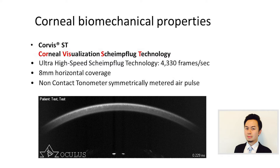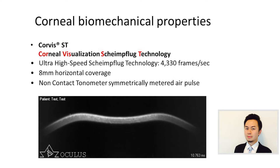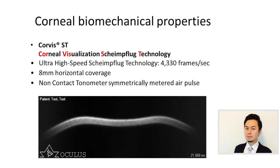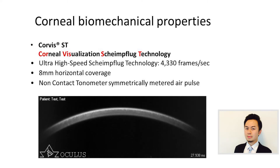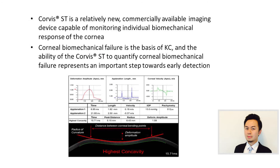We can see that the sensitivity of diagnosing forme fruste keratoconus is not high using corneal topometric or topographical methods. So here we would like to see if other properties such as corneal biomechanical properties aid in the diagnosis of forme fruste keratoconus. Here we have the Corvis ST, which stands for Corneal Visualization Scheimpflug Technology. It is a non-contact tonometer which shoots a symmetrically metered air puff to the cornea and measures the change in corneal shape using the Scheimpflug camera — a relatively new commercially available imaging device capable of monitoring the biomechanical response of the cornea.